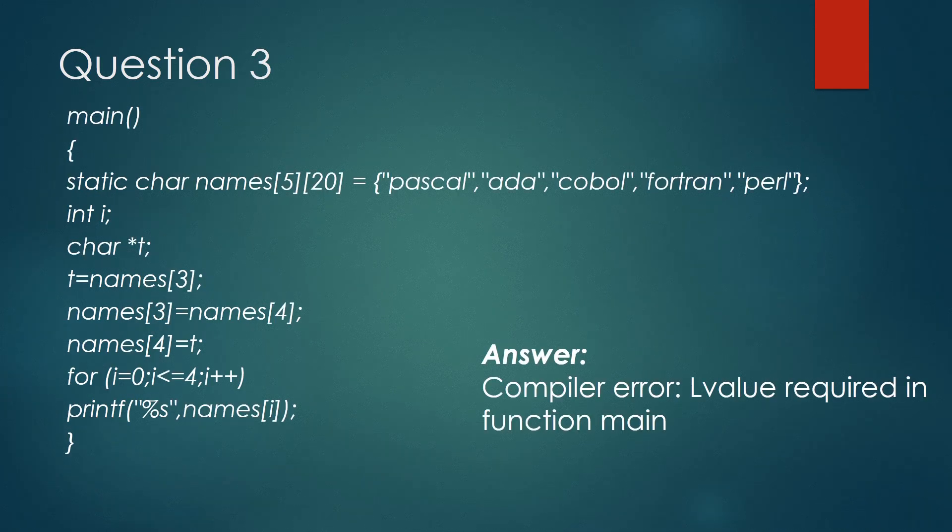Let's come to the third question. This is a tricky one. As you can see, there is a names two-dimensional array, and there are some assignments. So first of all, whenever there is a declaration or definition of array, then you should know that arrays are constant pointers. That means the value of array pointer can't be changed, though the value pointed by that array can be changed.